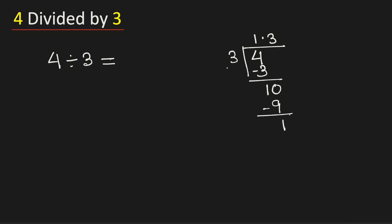Again, 1 is less than 3, so we put a 0 here. And 3 times 3 is 9. Subtract, we get 1. Now observe that we keep on getting 1's.